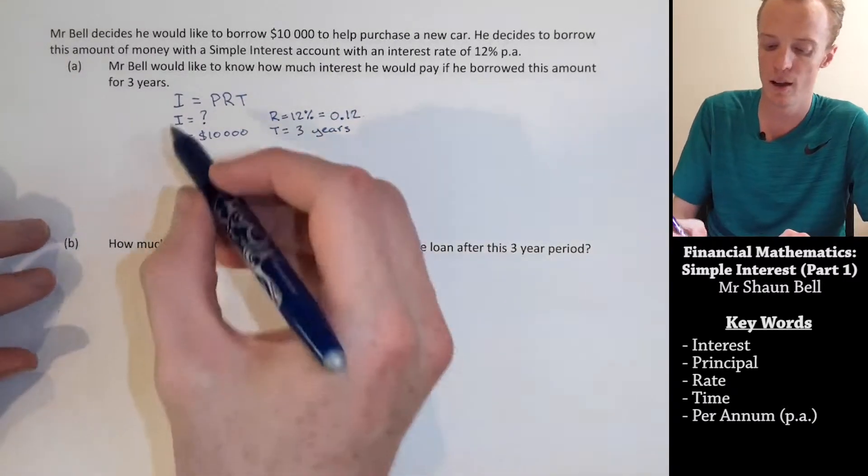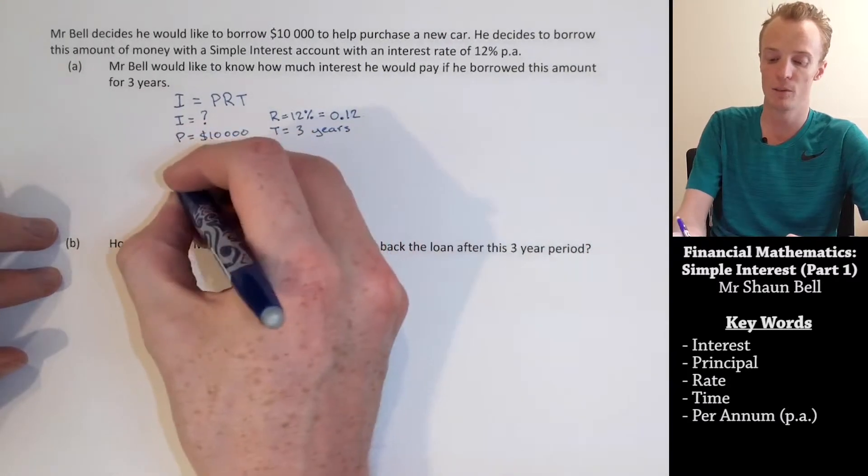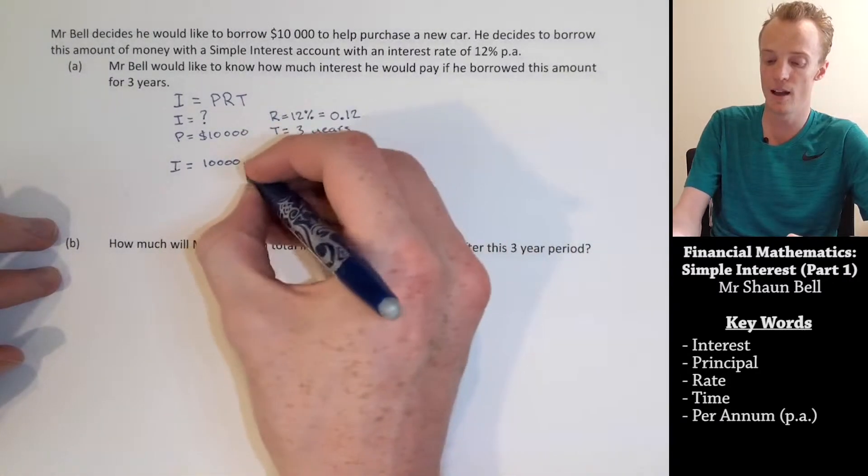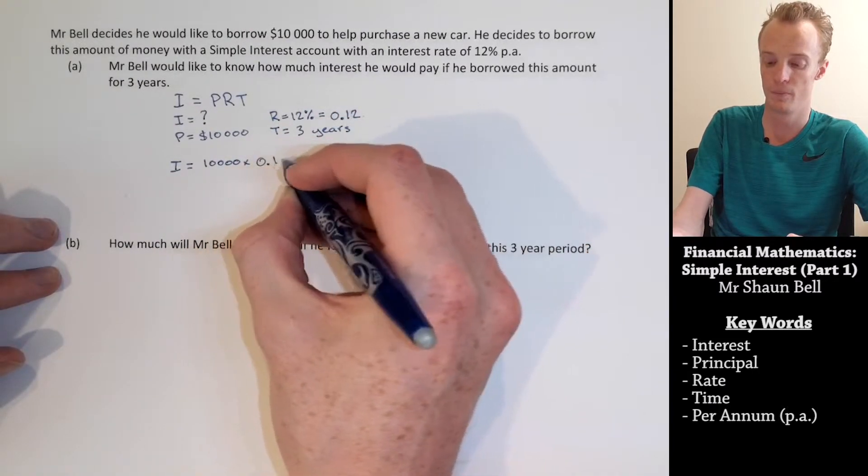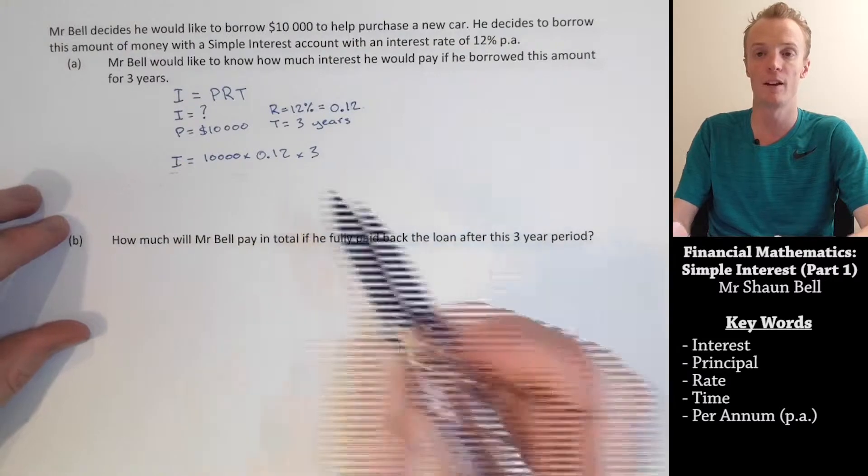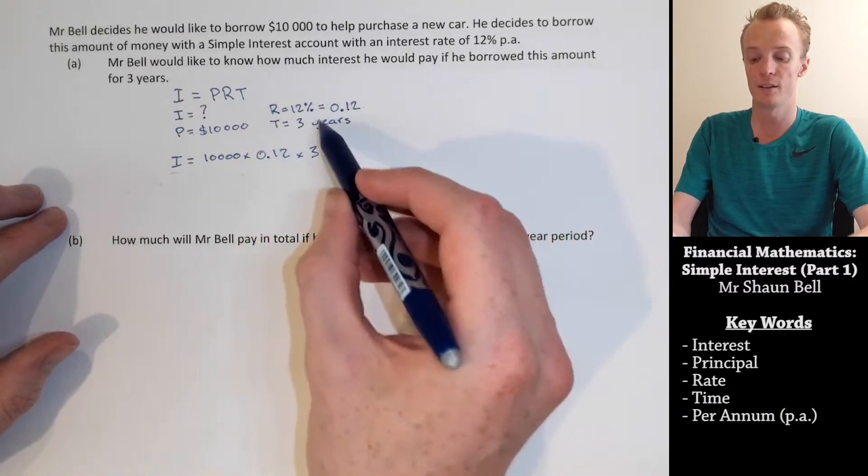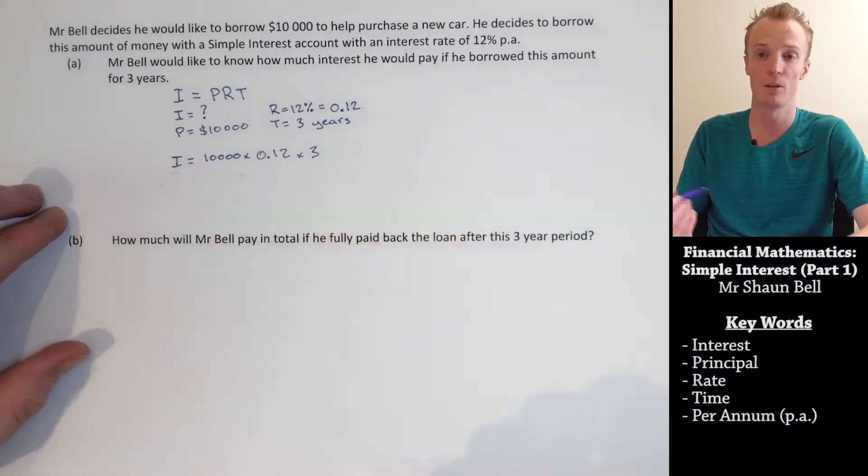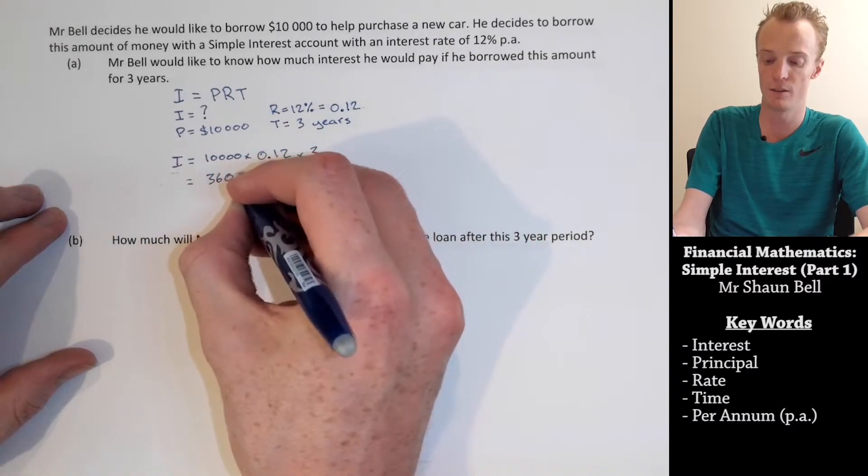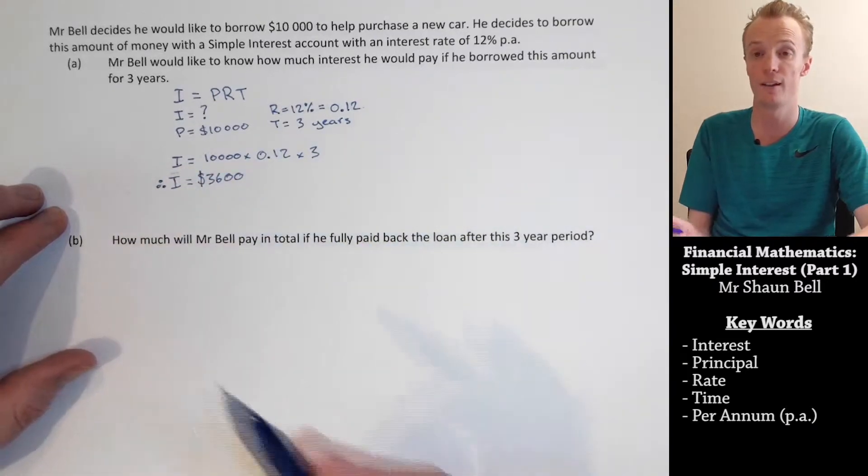Now, what I do is I substitute these values back into the formula that I've been given. So, my I, I don't know. So, I leave it as just I. The P is 10,000. So, I put that into the formula. The R is 0.12. And the T is going to be three years. Now, at this point, I could get a calculator out to solve this. However, I know that 3 times 12 is 36. So, this is going to be 0.36. Then, I move the decimal place four times because I'm multiplying by 10,000. So, that's going to be equal to 3600. I need to include my units, which will be dollars.